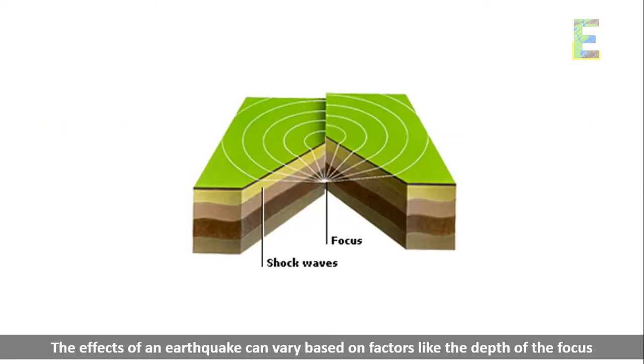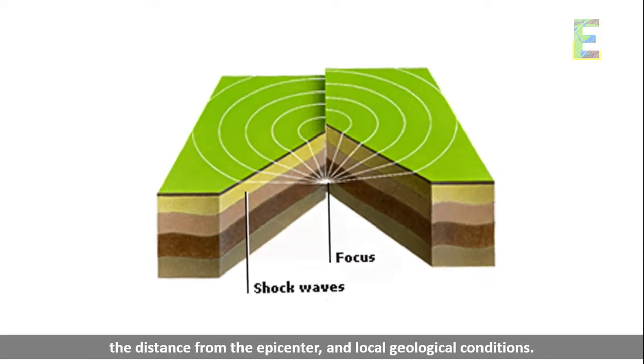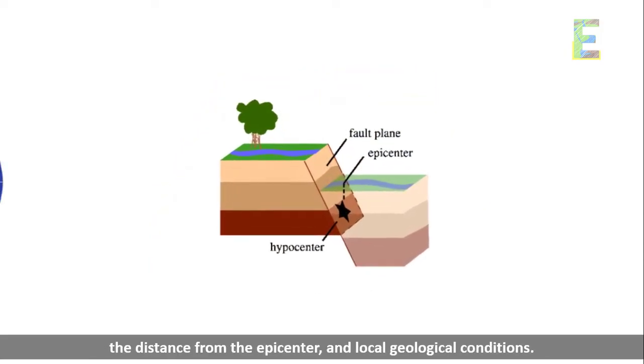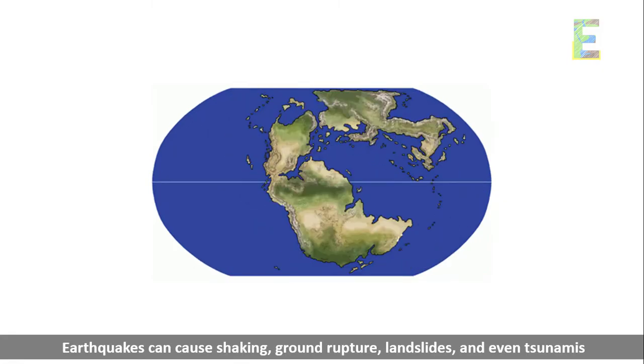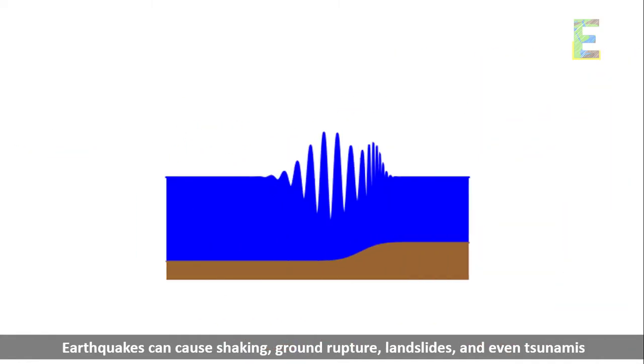Earthquake effects. The effects of an earthquake can vary based on factors like the depth of the focus, the distance from the epicenter, and local geological conditions. Earthquakes can cause shaking, ground rupture, landslides, and even tsunamis.